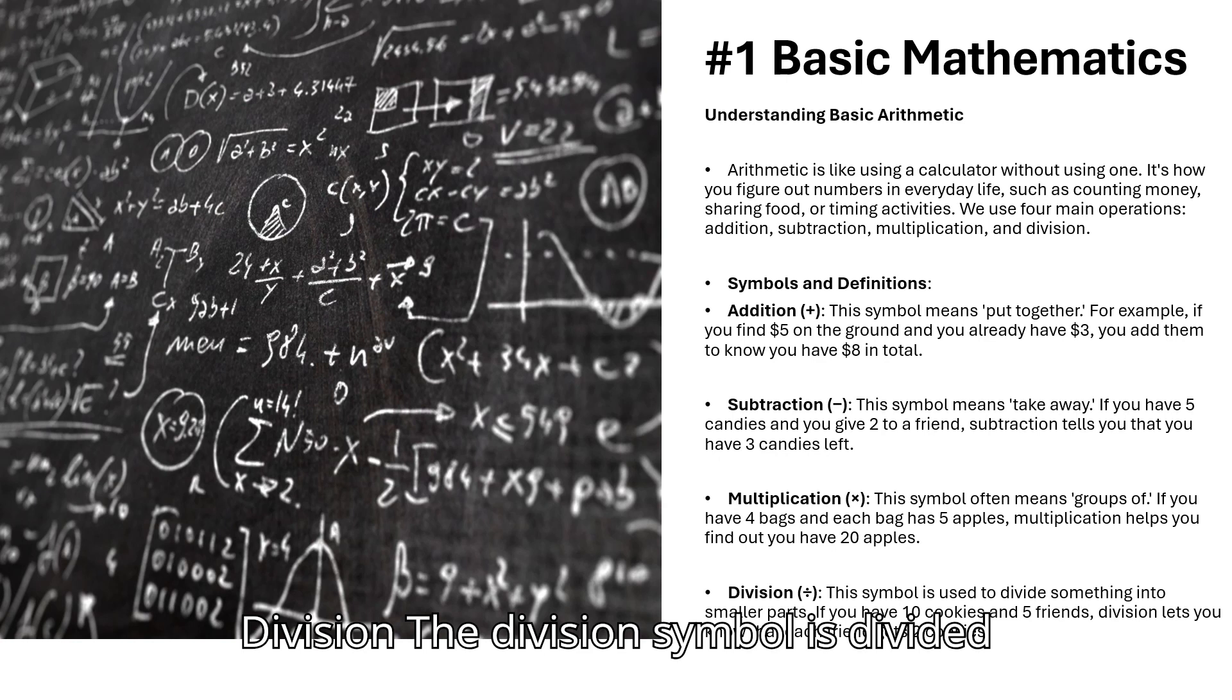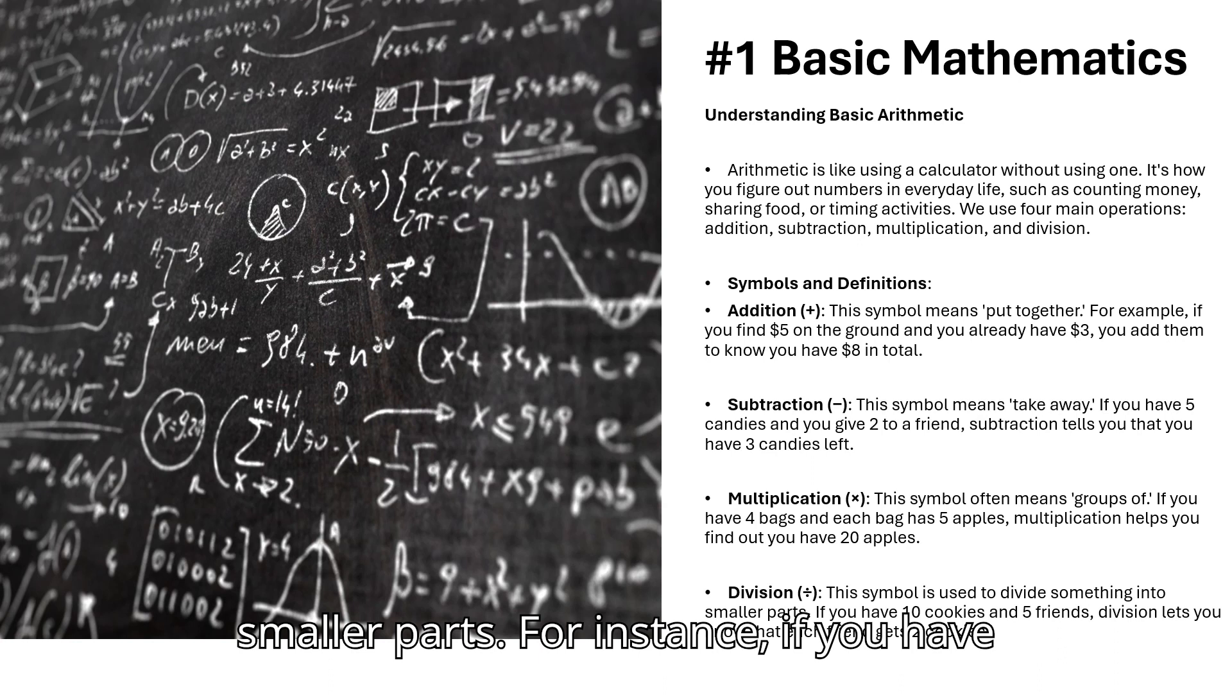Division - the division symbol is divided by. This operation splits something into smaller parts. For instance, if you have 10 cookies and 5 friends, division tells you that each friend gets 2 cookies.